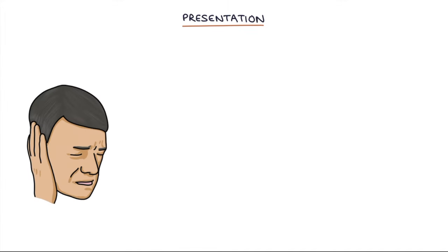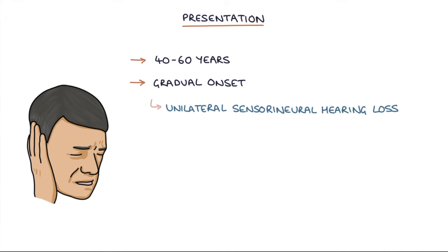Let's talk about the presentation. A typical patient is aged 40 to 60 years presenting with a gradual onset of unilateral sensorineural hearing loss, which is often the first symptom.